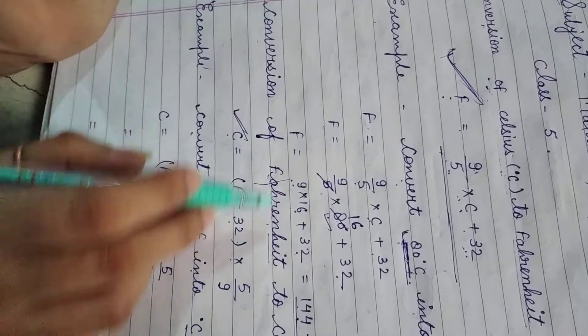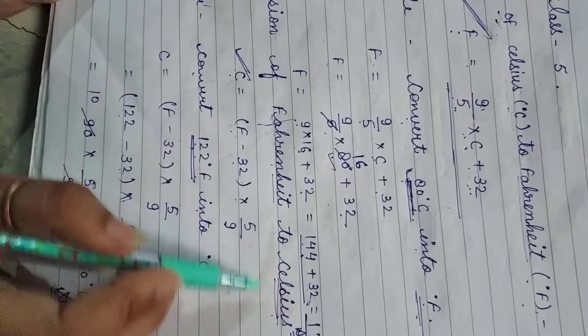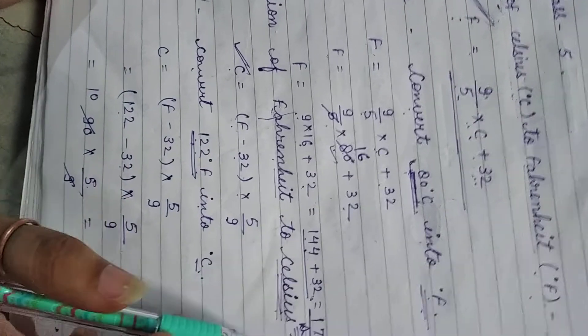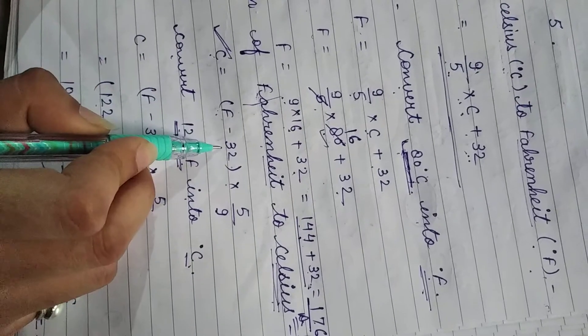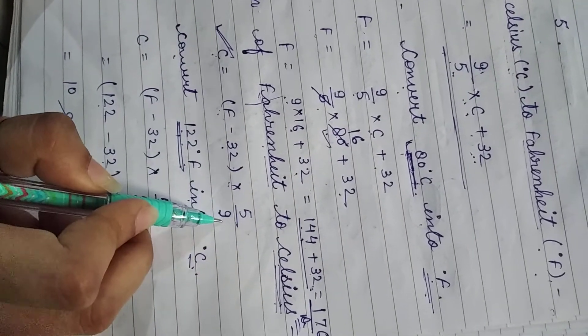Second, conversion of Fahrenheit to Celsius. The formula for this is C equals F minus 32 into 5 upon 9.